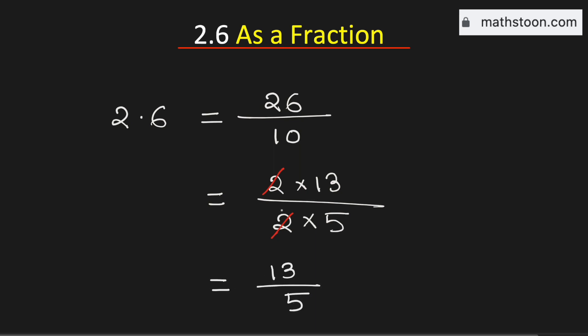As both 5 and 13 are prime numbers, this fraction cannot be simplified. So it is already in simplified form. Therefore, 2.6 as a fraction is the same as 13 over 5. This is our final answer.